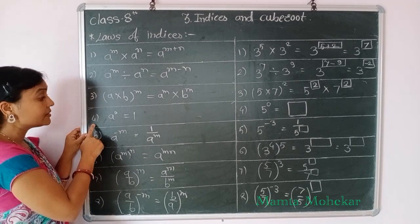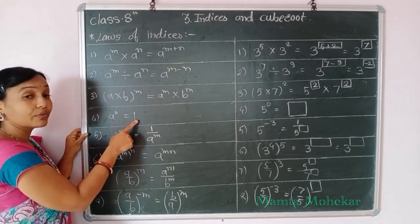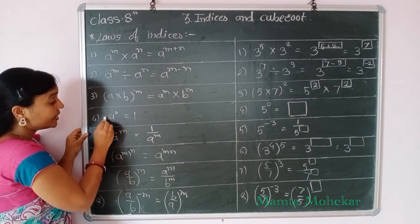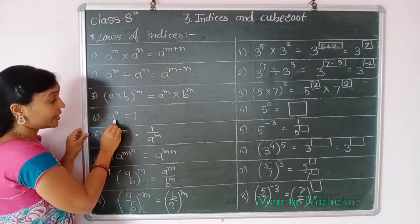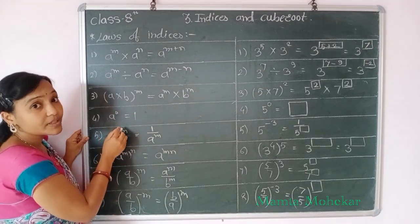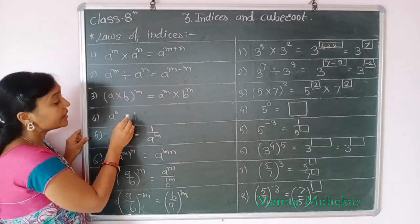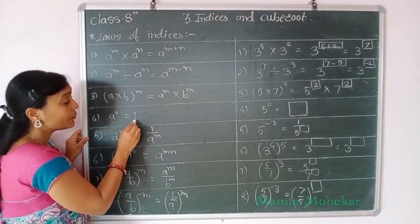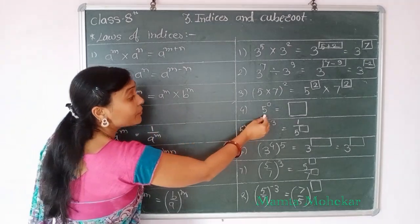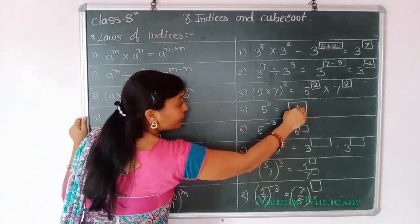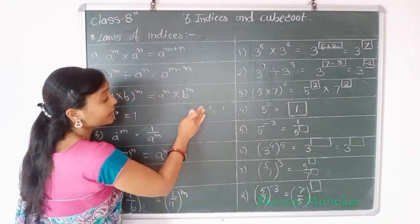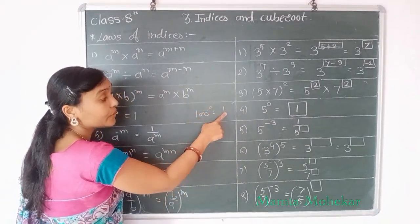Our next rule is: A raised to power 0 equal to 1. This rule means any rational number raised to power 0 equals 1. Example: 5 raised to power 0 equals 1. If 7 raised to power 0, value is 1. If 100 raised to power 0, value is 1.